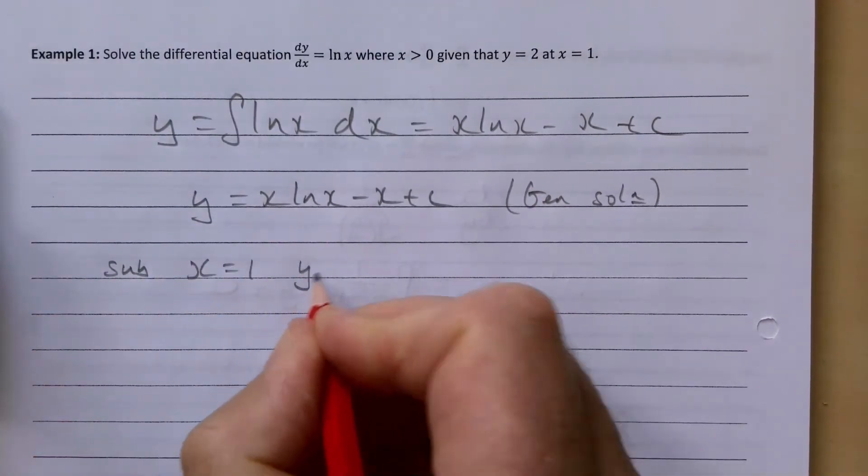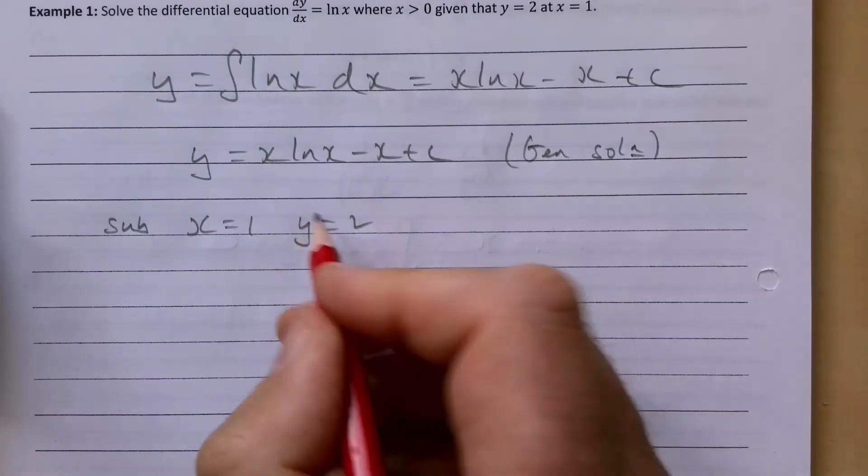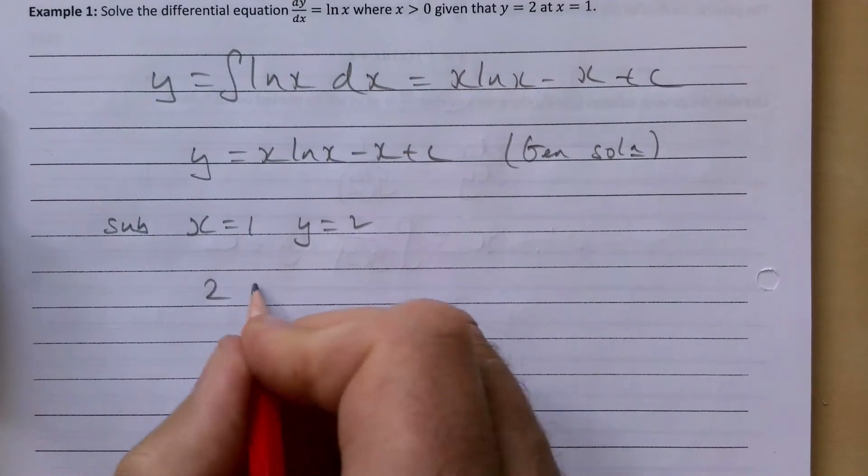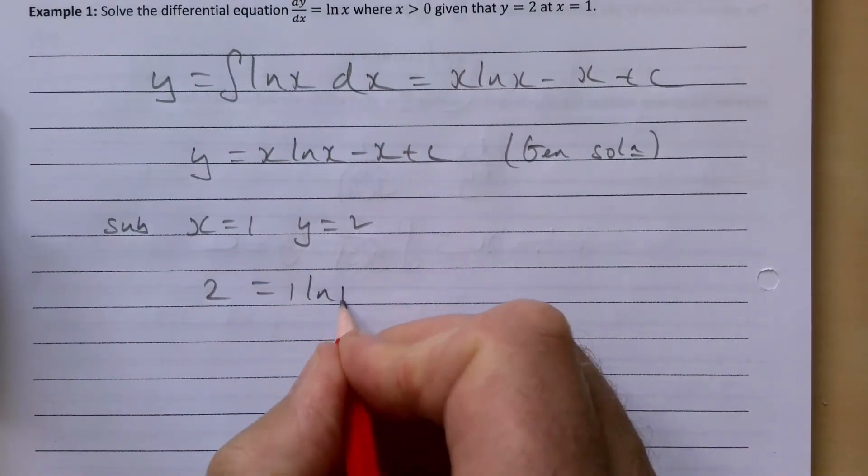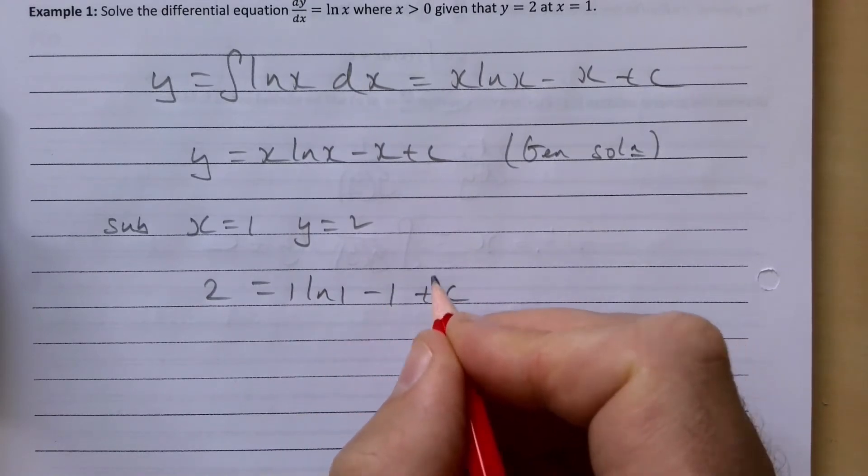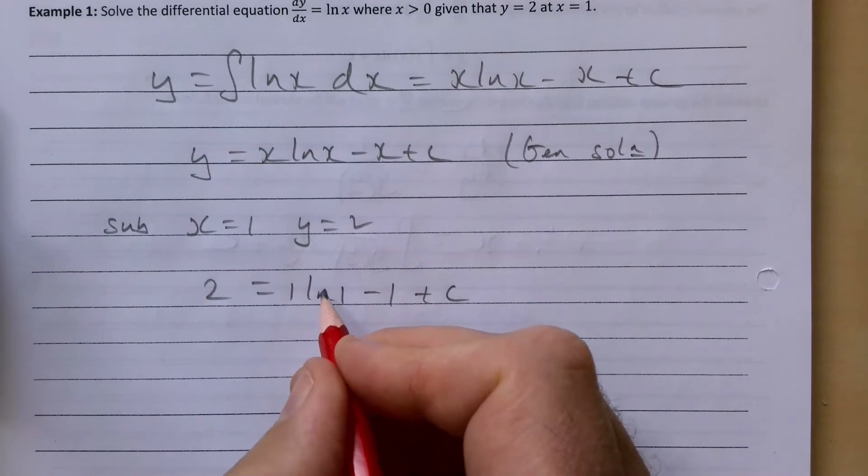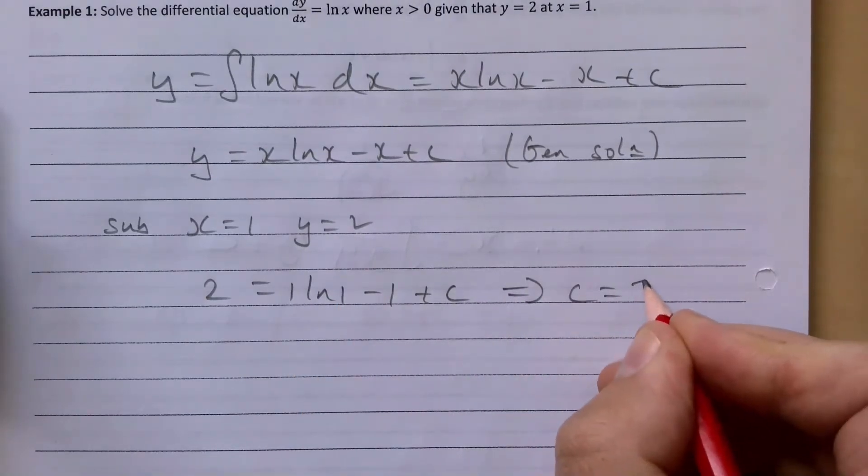x = 1 and y = 2. So 2 = 1·ln(1) - 1 + c. 1·ln(1) gives you 0, the ln(1) is 0. So the value of c is 3.